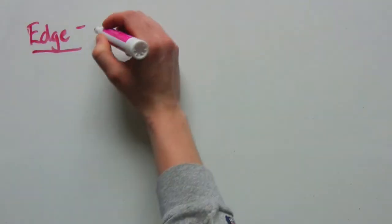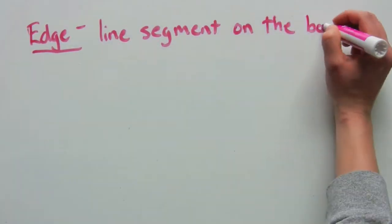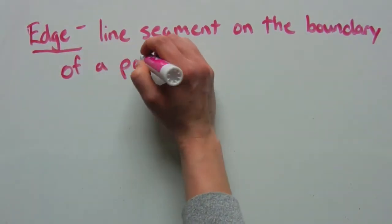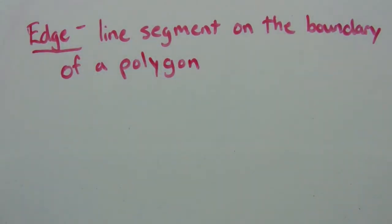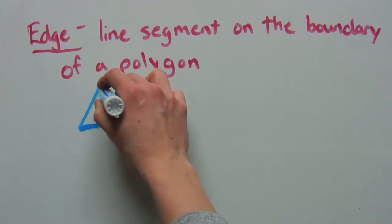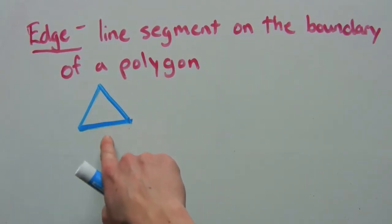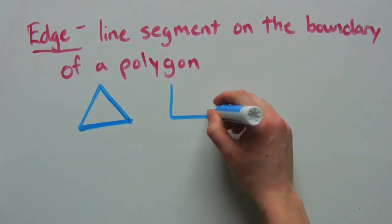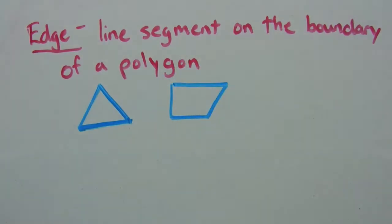First let's talk about edge. An edge is the line segment on the boundary of a polygon. If we were to have a triangle, there are three line segments or three edges that make up the boundary of that polygon. A quadrilateral has four edges. So think of an edge like a side of a polygon.